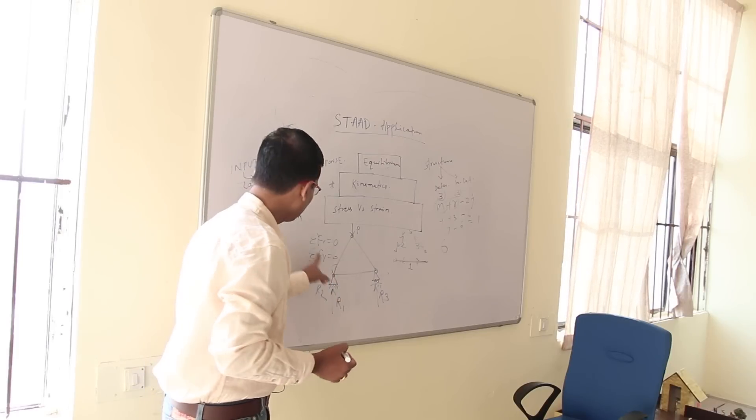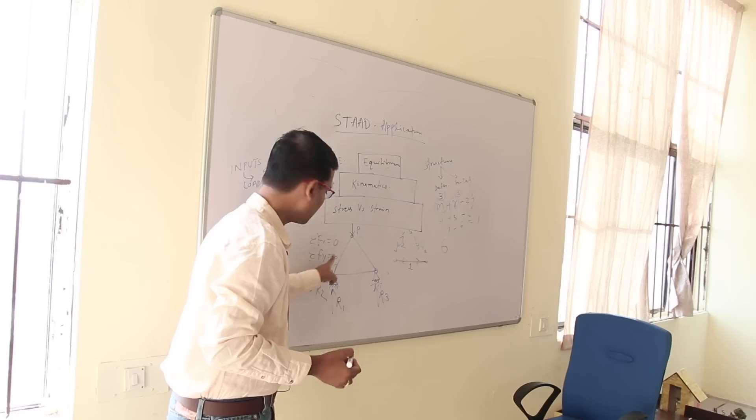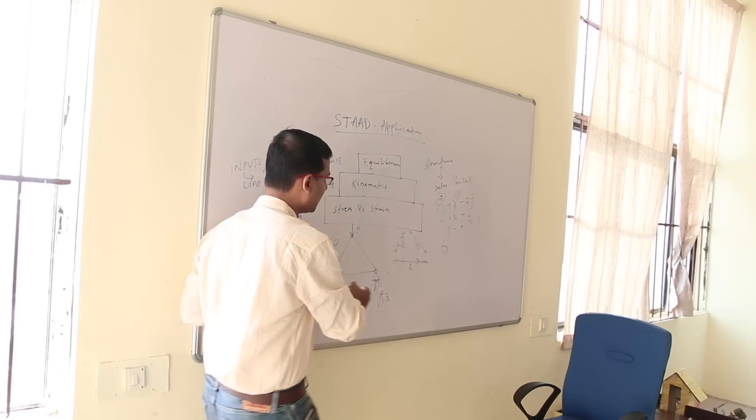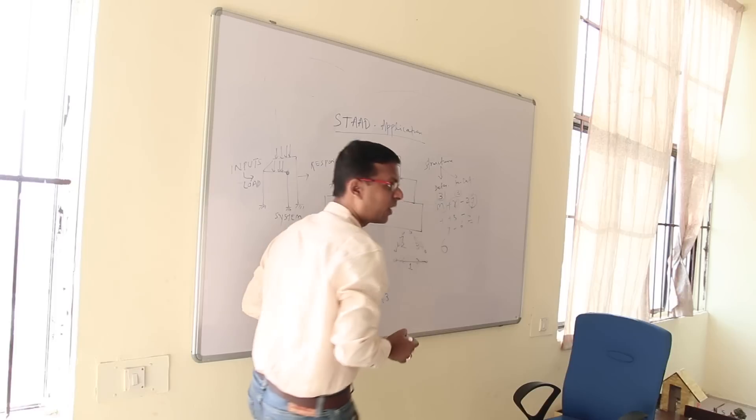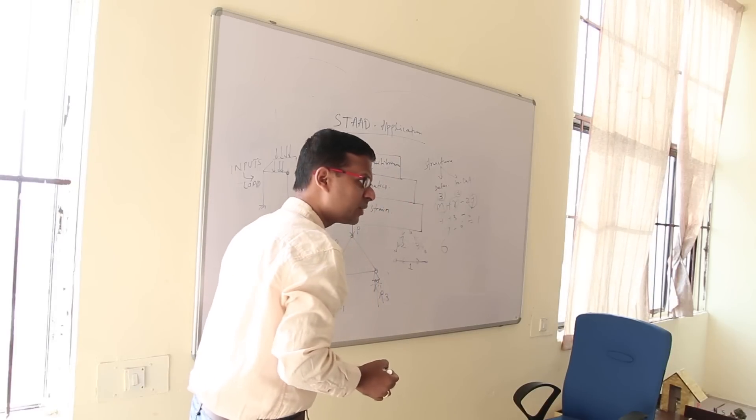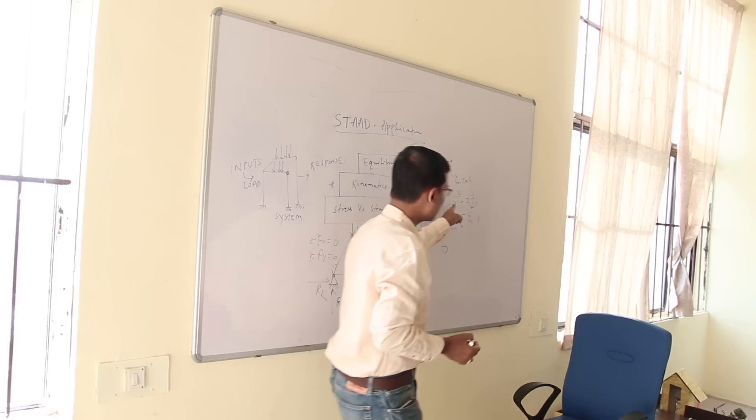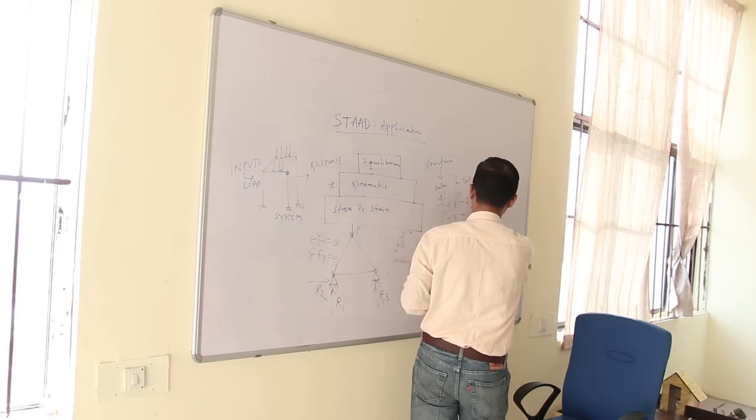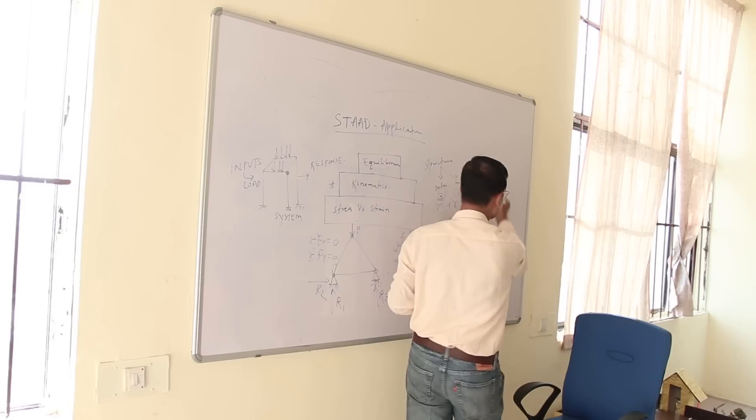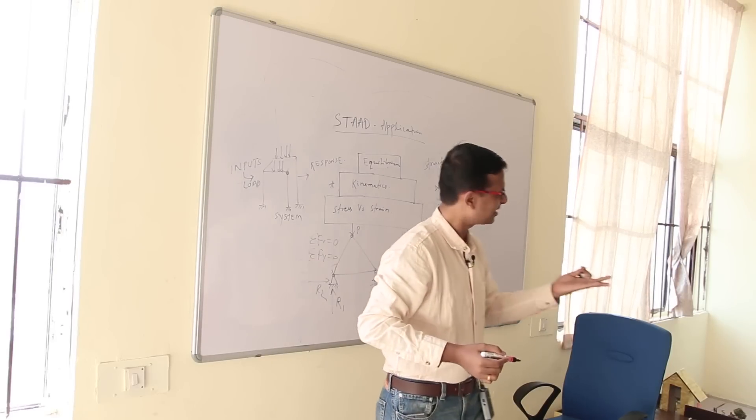I have an equation here, ΣFx equal to 0, ΣFy equal to 0. How many joints are there? 2 into joint. Why 2? Equation number 1, equation number 2. So how many equations I have? 2 into 3, that is 6. So 6 unknowns, 6 known equations. Can I solve?